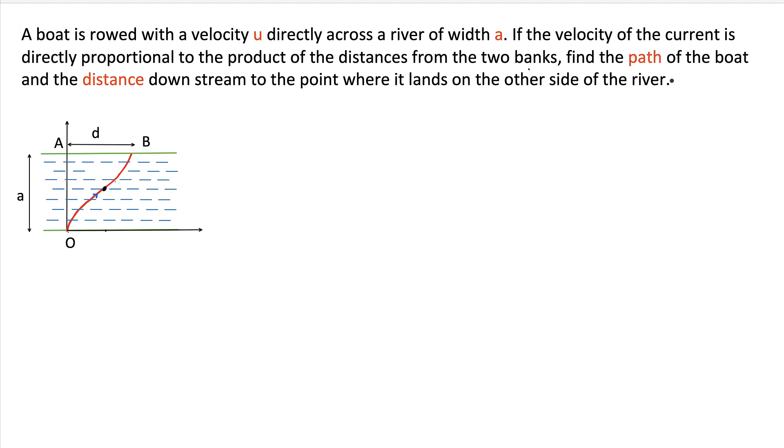So there is a boat which is being rowed with the velocity u directly across a river of width a. Let's say this is the river of width a. Let's say the velocity is u which is given directly across the river. And it is also given that the velocity of current is directly proportional to the product of the distances from the two banks.